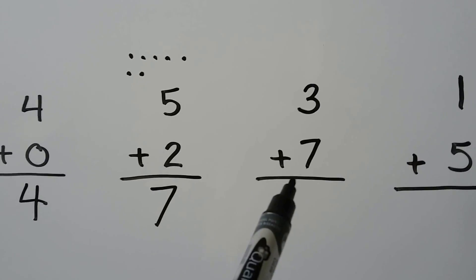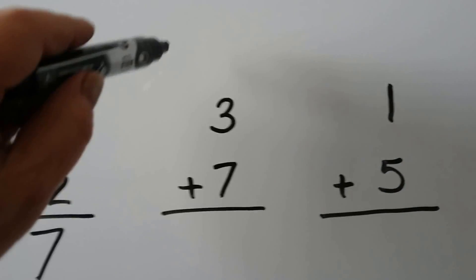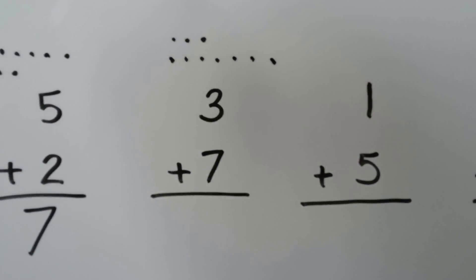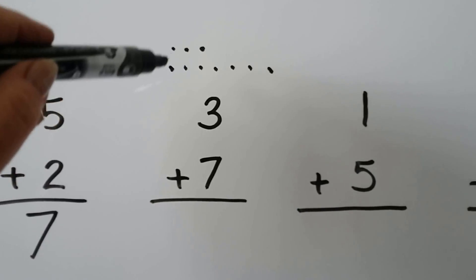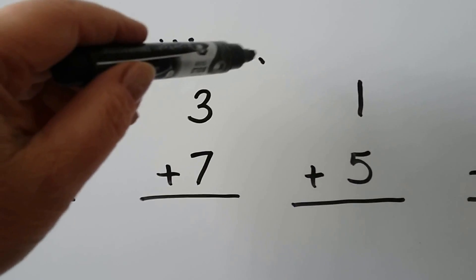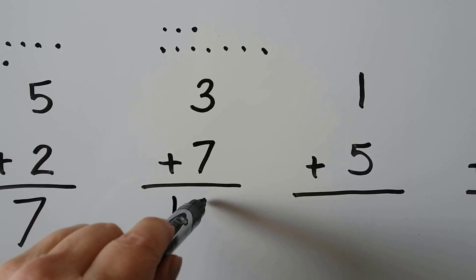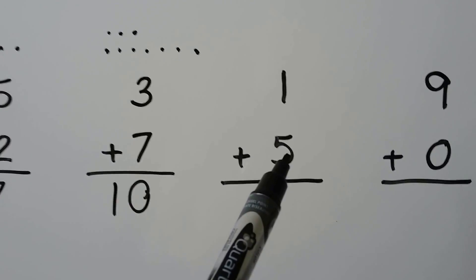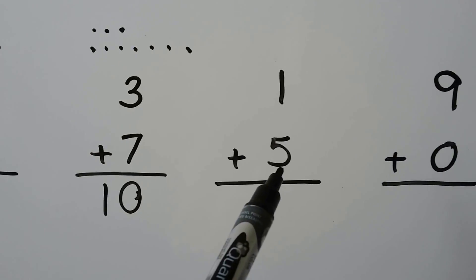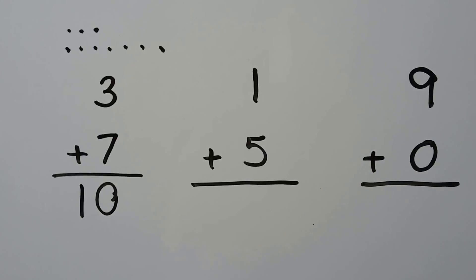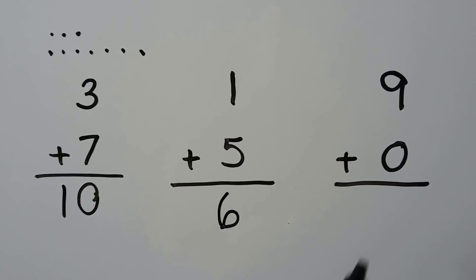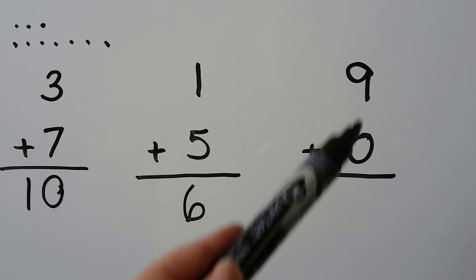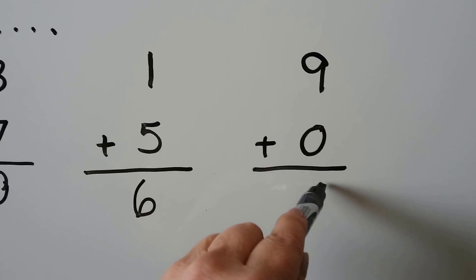What about three plus seven? We can make dots to help us — one, two, three, and one, two, three, four, five, six, seven. We can count them — one through ten. Three plus seven is equal to ten. What about one plus five? That's the same thing as five plus one, because we can add in any order. Five and one more would be six. What about nine plus zero? Any number that has zero added to it stays the same. So that would just be nine.